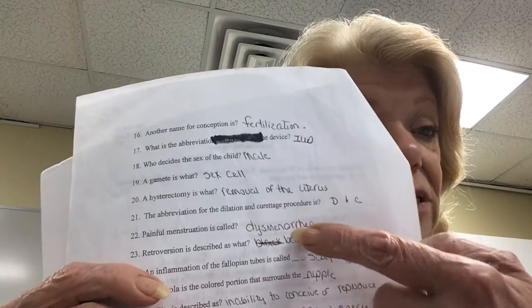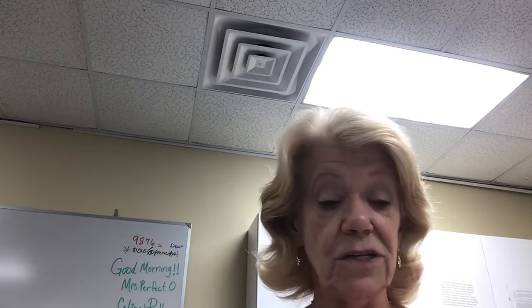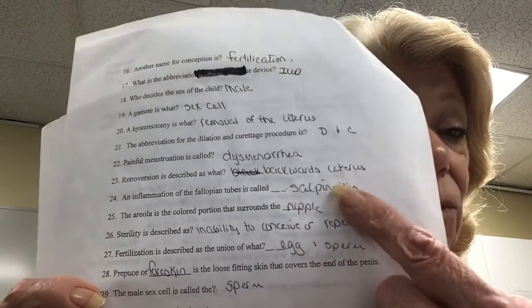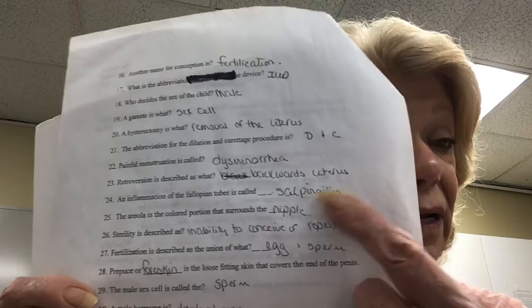So dysmenorrhea means you're going to have a watery discharge and it's going to be painful. The uterine lining has fallen off because no egg was fertilized, and sometimes women have more cramps than others — it just depends. Retroversion — remember, not facing forward, but if the uterus is facing backward — retroversion is a backwards uterus. Inflammation of the fallopian tubes is salpingitis: salping means fallopian, itis means inflammation. The organ and what's happening to it.